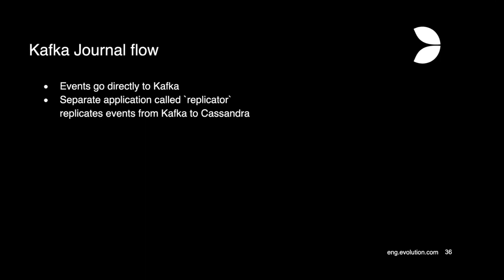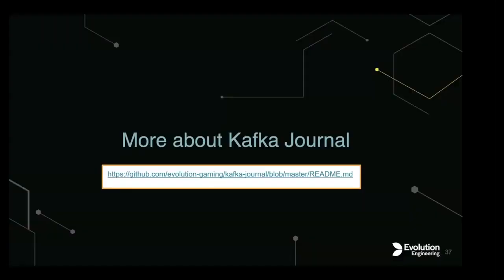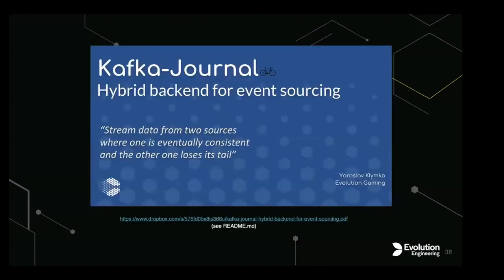It's quite easy to embed, basically just substituting the required journal plugin. The Kafka Journal flow works as follows: events go directly to Kafka, not to Cassandra as before, and a separate replicator application replicates events from Kafka to Cassandra. I won't go deeper into Kafka Journal internals here — you can check out the GitHub repo. There is also a presentation by Yaroslav Kalinchenkov, the author of the library, who gave a comprehensive talk about Kafka Journal. Unfortunately there is no recording saved online, but the slides give a thorough explanation of how it works.